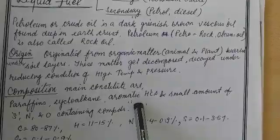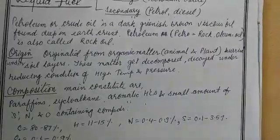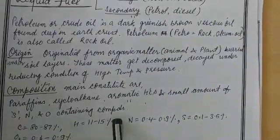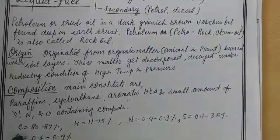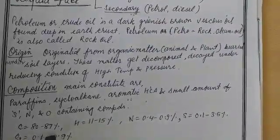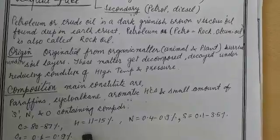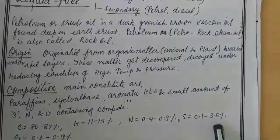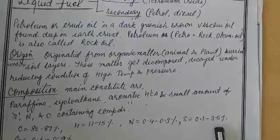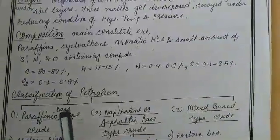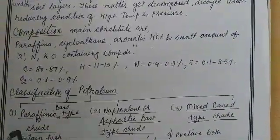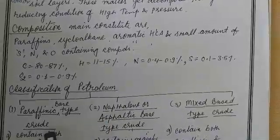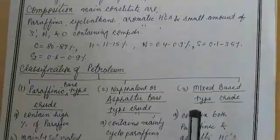Composition of crude petroleum: It contains paraffins (that is, alkanes), cycloalkanes, aromatic hydrocarbons, and small amounts of nitrogen, sulfur, and oxygen-containing compounds. It contains carbon 80 to 87 percent, hydrogen 11 to 15 percent, nitrogen 0.4 to 0.9 percent, sulfur 0.1 to 3.5 percent, and oxygen 0.1 to 0.9 percent.